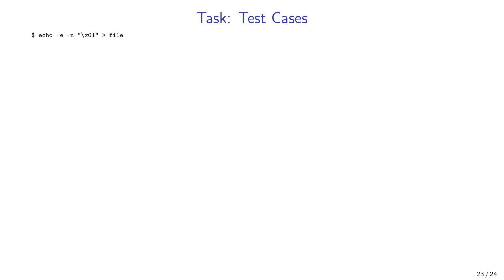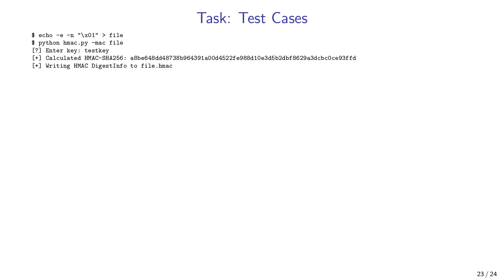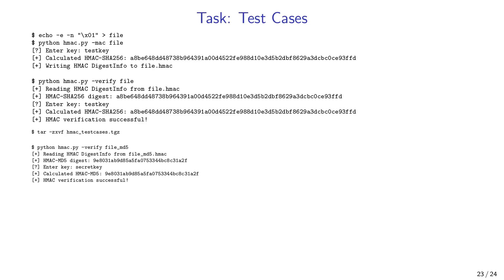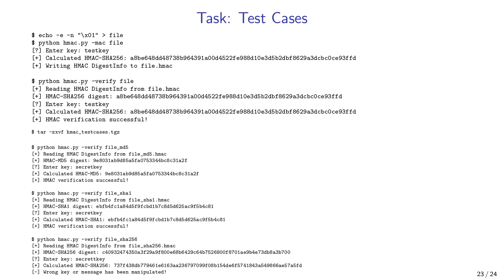The test cases: create a data file containing a specific byte, MAC it using the key 'test key', and if your implementation is correct, you will get the specified exact MAC value. Then verify the MAC using the same key and verification is successful. The course repository contains HMAC test cases for MD5, SHA-1, and SHA-256. Entering an incorrect key shows 'wrong key or message has been manipulated'. Make sure the output produced by your tool precisely matches the output shown.